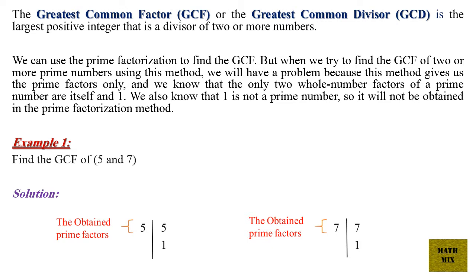We can use the prime factorization to find the GCF. But when we try to find the GCF of 2 or more prime numbers using this method, we will have a problem because this method gives us the prime factors only. And we know that the only two whole number factors of a prime number are itself and 1. We also know that 1 is not a prime number, so it will not be obtained in the prime factorization method.